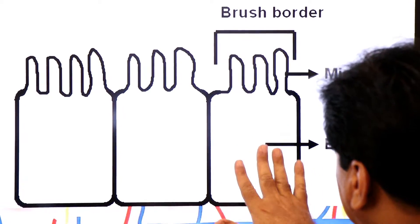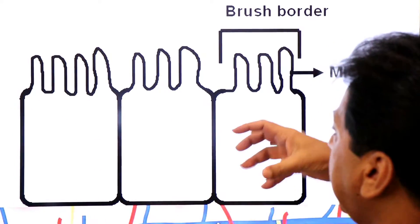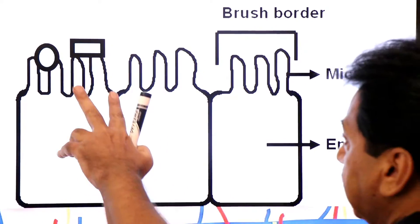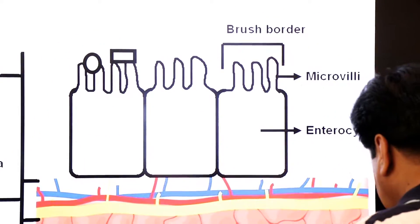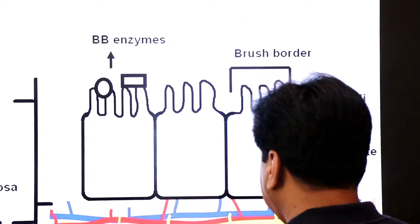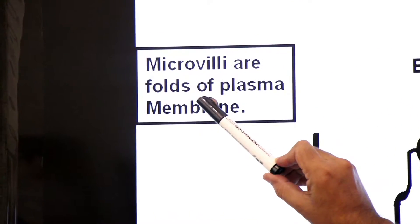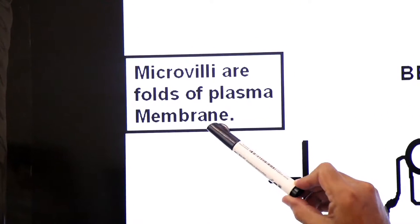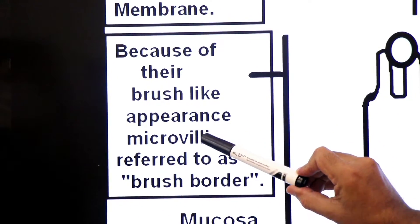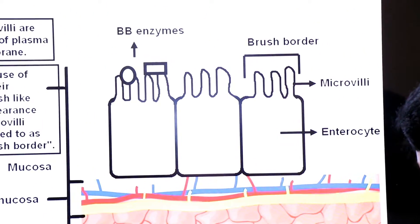The enterocytes release enzymes that are embedded in the microvilli. These are called brush border enzymes. The microvilli are folds of the plasma membrane of enterocytes. Because of their brush-like appearance, microvilli are referred to as the brush border. The enzymes produced by enterocytes and embedded in the microvilli are known as brush border enzymes.